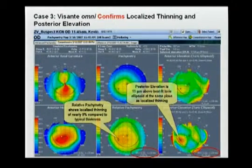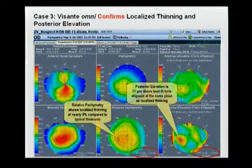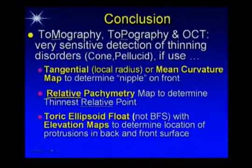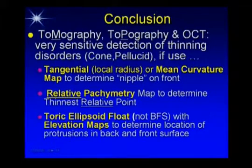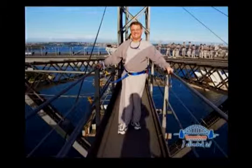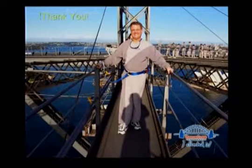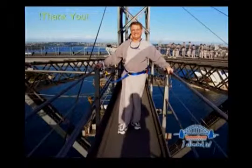As soon as you get three corresponding red points, it's basically forme fruste keratoconus. With tomography and with topography combined with OCT, we can use the tangential map, the relative pachymetry map, and the toric ellipsoid float — together allowing more sensitive detection of keratoconus. I hope this helps you do a better job with your instruments to find these patients so we don't accidentally operate on them. Thank you very much.